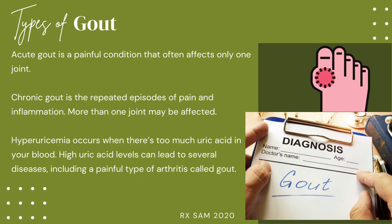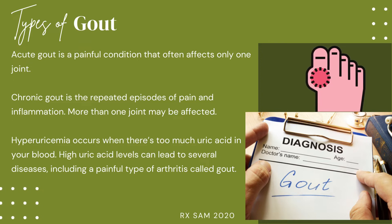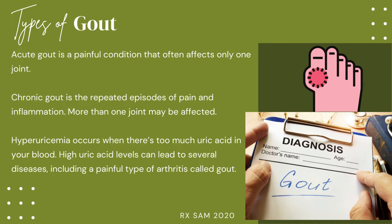Hyperuricemia occurs when there is too much uric acid in your blood. High uric acid levels can lead to several diseases, including a painful type of arthritis called gout.